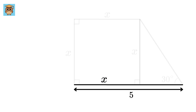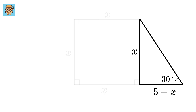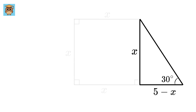Now, look at this side. If this is 5, and this is x, so this will be 5 minus x. Now, look at this right-angle triangle. This side is x, this side is 5 minus x, and this is 30 degrees.